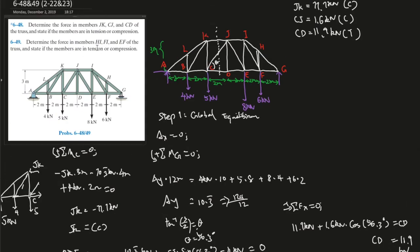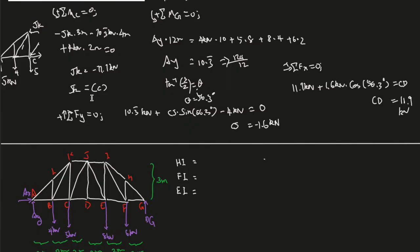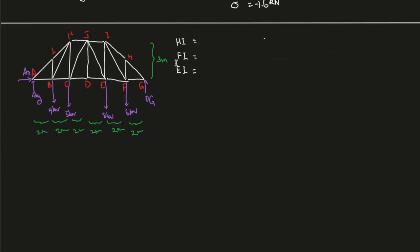It says that determine the forcing member HI, FI, and EF of the truss to state a member in tension or compression. It's already drawn up here. So we know we need to go ahead and cut this section, the truss from over here. And before we go on to that,